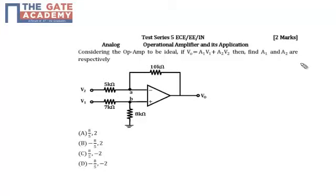In this problem from an analog topic on operational amplifiers, we have an op-amp network and it says that V naught is equal to A1 V1 plus A2 V2. We need to find out the value of A1 and A2.